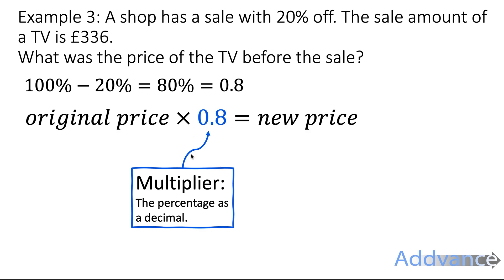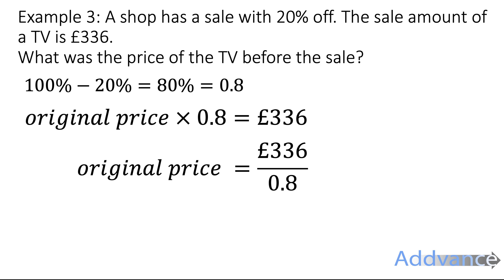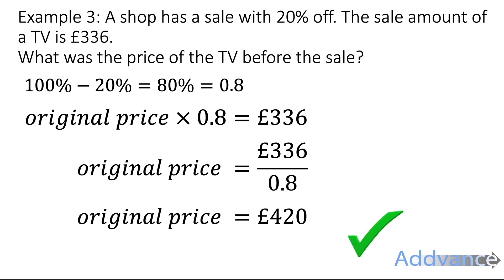80% is 0.8, so the original price times 0.8 equals the new price of £336. Here 0.8 is the multiplier. So the original price × 0.8 = £336, and we need to solve this equation. Since it says times by 0.8, the opposite is dividing, so we do £336 ÷ 0.8 to find the original price, which is £420. That is the correct answer — the price before the sale.